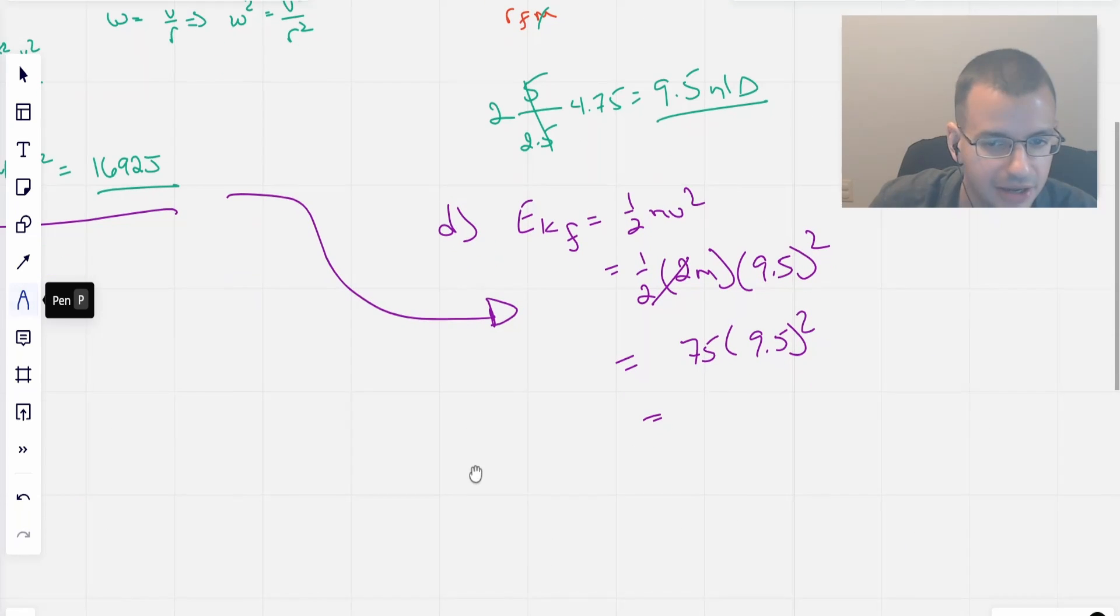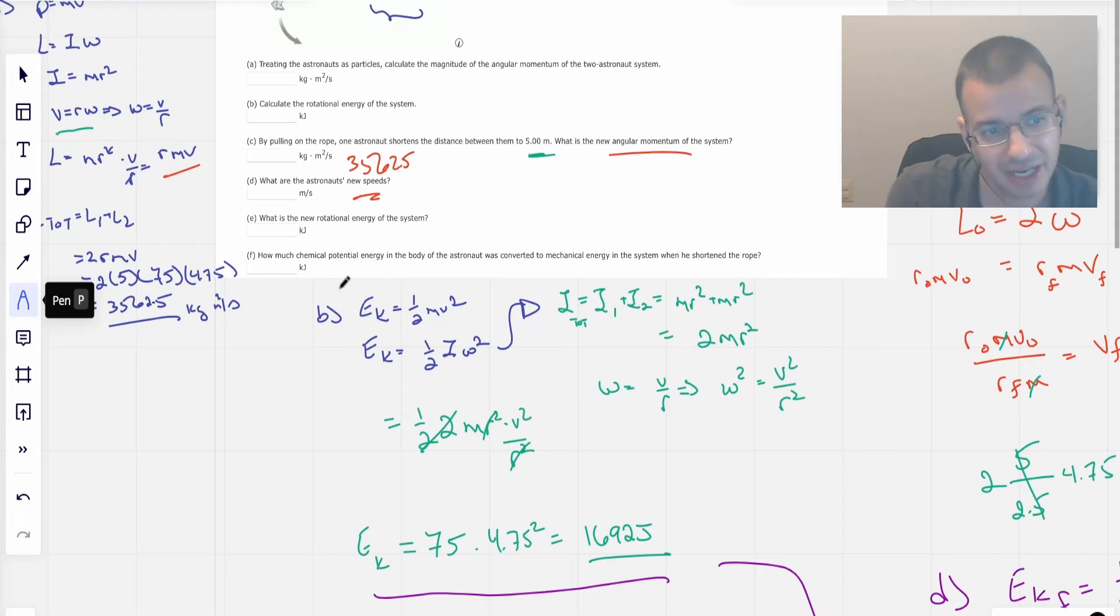And so putting that into a calculator, we get 75 times 9.5 squared, and that gives us 6769 joules. Which just seems like a lot and I guess it is. But what they want in kilojoules. So we have 6. Similar with this one, up here should be 1.692 kilojoules.